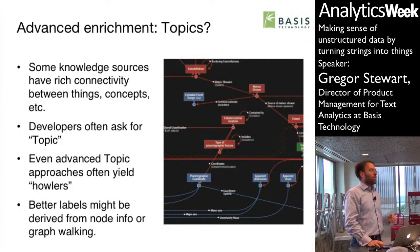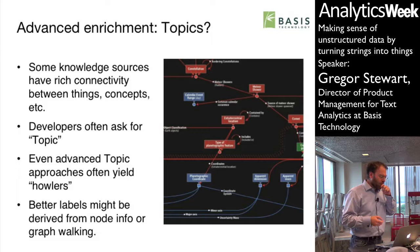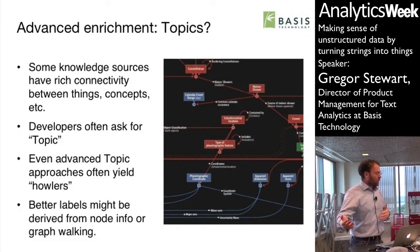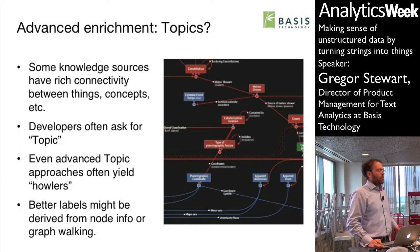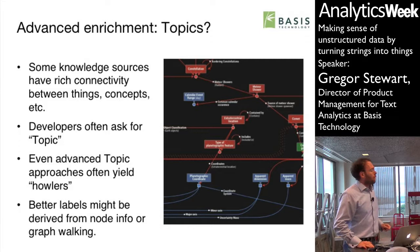Taking a further step back, these are the two speculations. Many public knowledge sources have rich connectivity — they're a graph between things and concepts and classes, different kinds of descriptors. This can be incredibly useful for tasks other than just finding out how romantic Tiger Woods is. Developers often ask for topics, and there are many algorithms for extracting them.